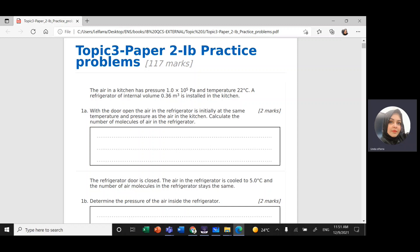Calculate the number of molecules of air in the refrigerator. We have the pressure P, the temperature in Celsius, 22 degrees Celsius. We have to convert it to Kelvin by adding 273. We have the volume V, and we need to find the number of molecules n.